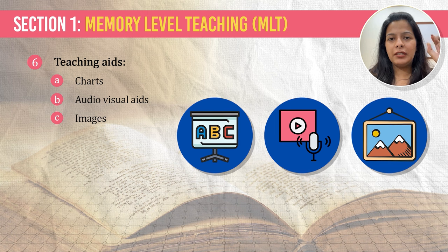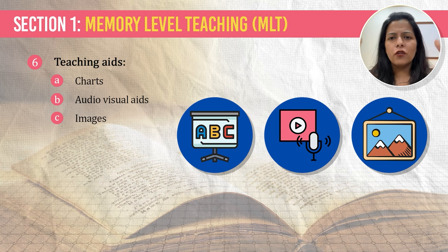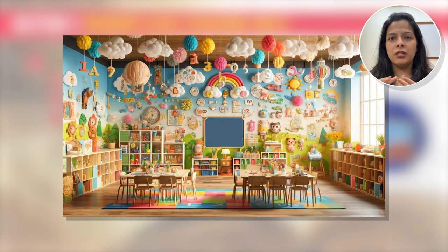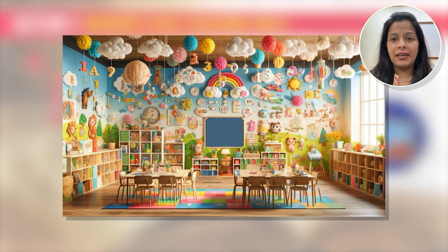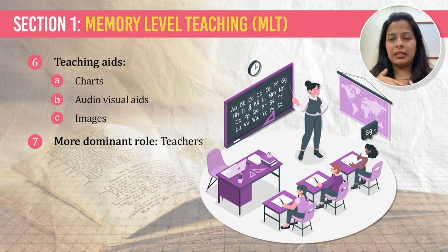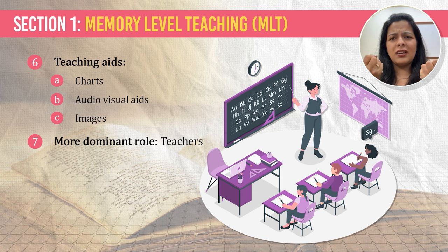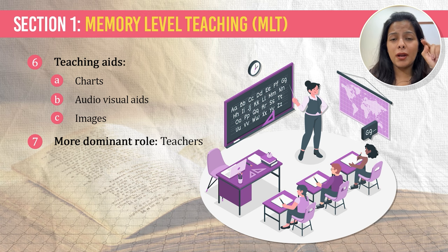Under this level, teachers generally use tools like charts, images, or audio-visual aids. If you have seen kindergarten classrooms, there are a lot of charts pasted in the room with animals and alphabets, and teachers teach students through those charts. As we can see, in this whole level the role of the teacher is dominant while students are just absorbing the information.